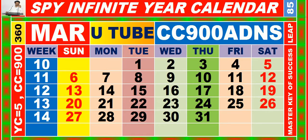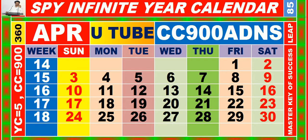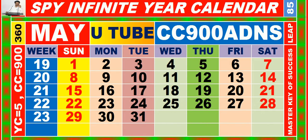Calendar for the month of March having calendar code equal to 9-0-0. Calendar for the month of April having calendar code equal to 9-0-0. Calendar for the month of May having calendar code equal to 9-0-0.